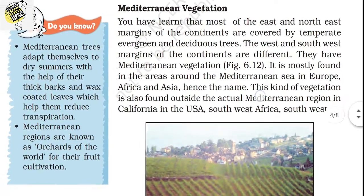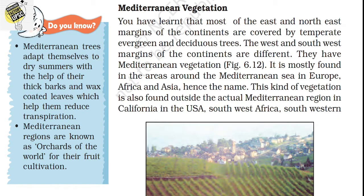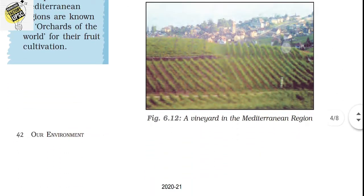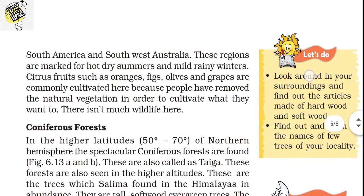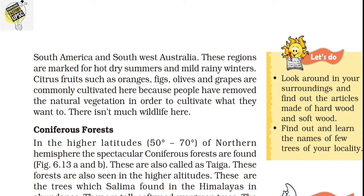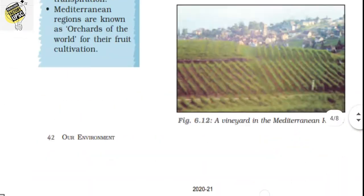Most of the east and northeast margins of continents are covered with temperate evergreen and deciduous trees. The west and southwest margins of continents have Mediterranean vegetation, mostly found in areas around the Mediterranean Sea in Europe, Africa, and Asia. This kind of vegetation is also found in California (USA), southwest Africa, southwest America, and southwest Australia. These regions are marked for hot dry summers. Citrus fruits like oranges, figs, olives, and grapes are commonly cultivated here, and there isn't much wildlife.